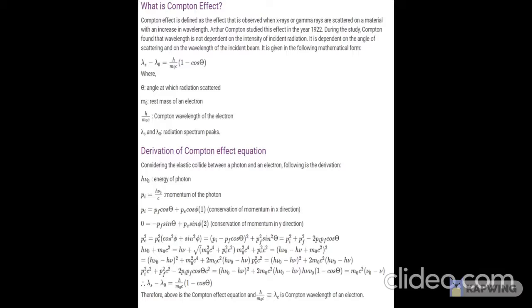Now the Compton formula for the shift in wavelength is lambda s minus lambda 0 equals h by m0 c times 1 minus cos theta. Where theta is the angle at which radiation is scattered, m0 is the rest mass of an electron, and h by m0 c is the Compton wavelength of the electron. Lambda s and lambda 0 are radiation spectrum peaks.